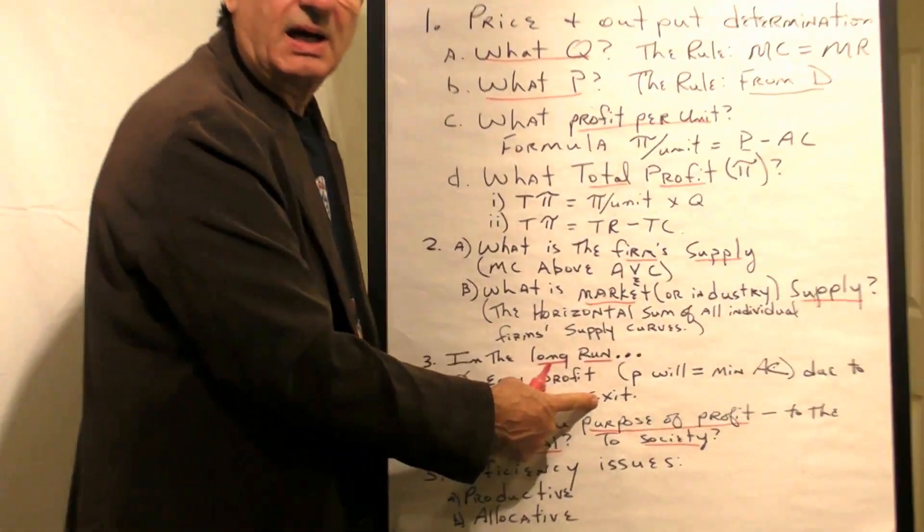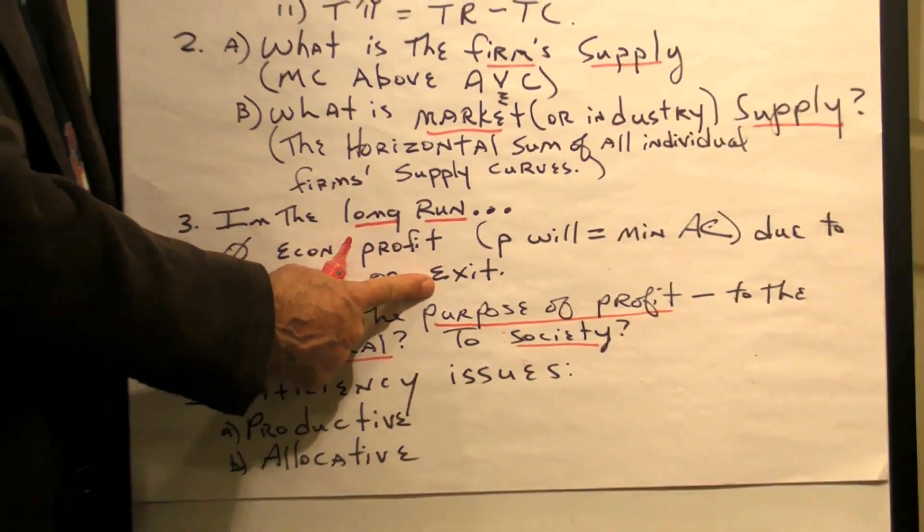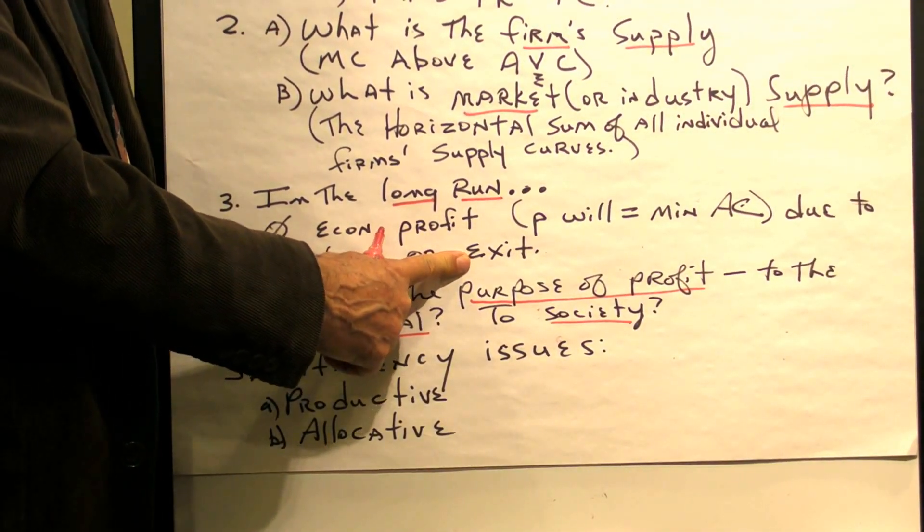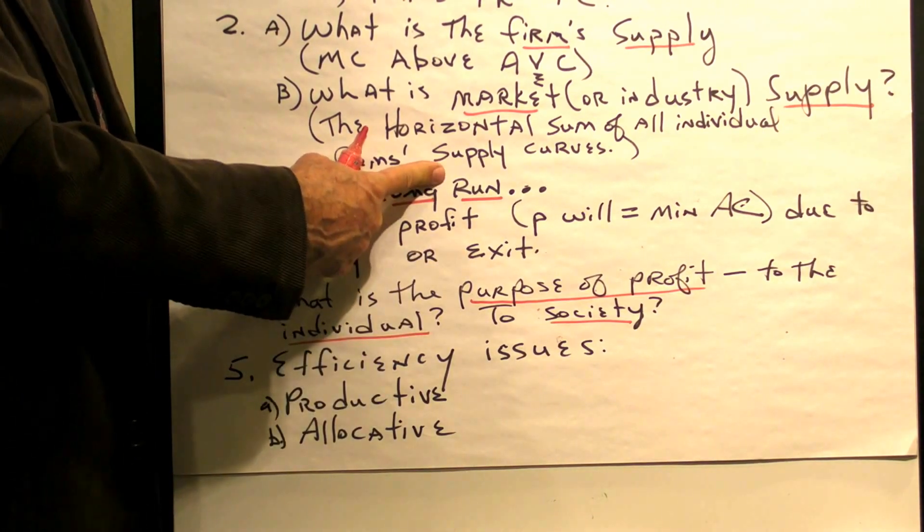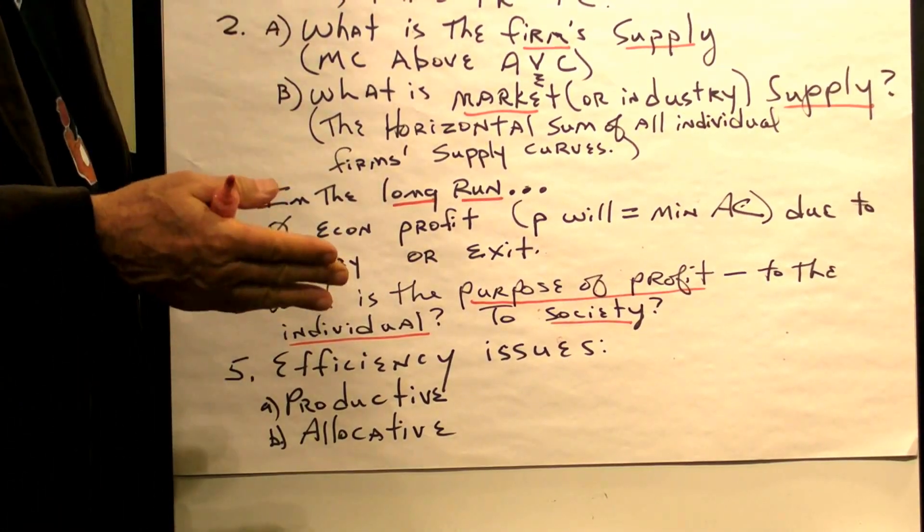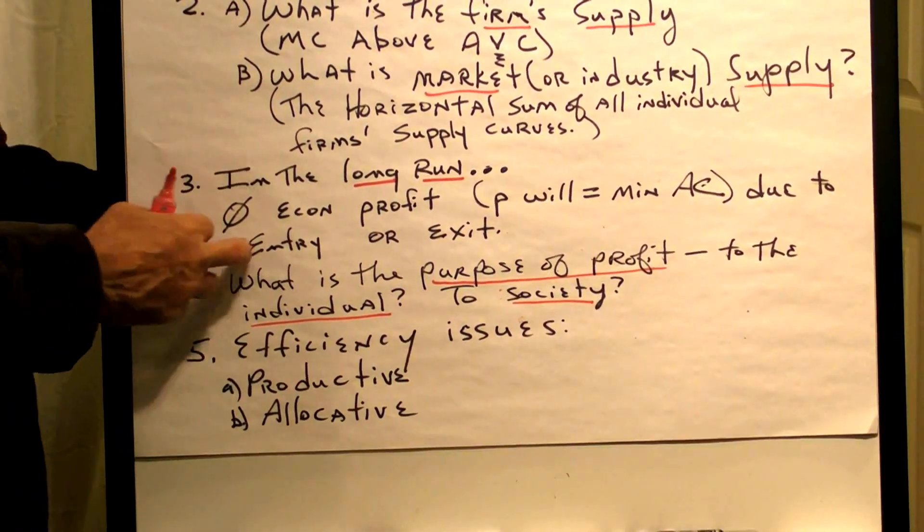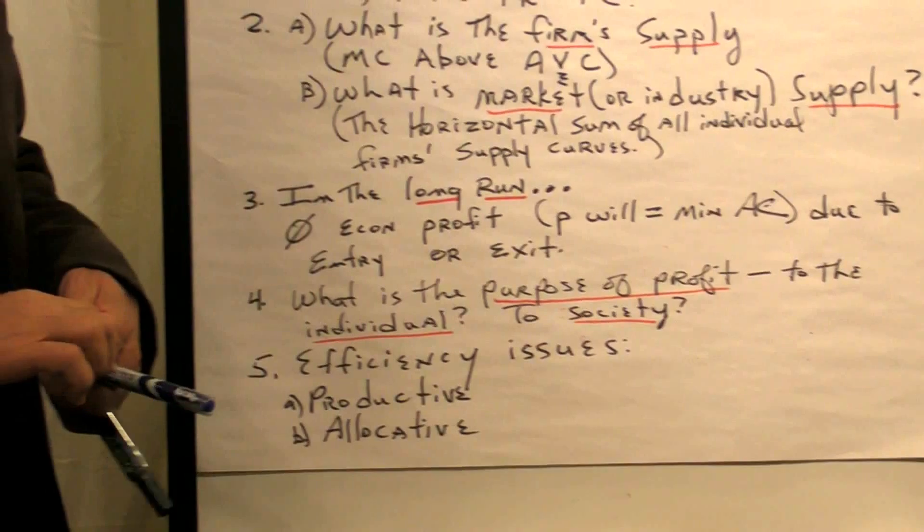If there's loss, firms have an incentive to exit. That causes the supply in the market to shift left, and the price goes up until it's just equal to average cost again, and there's no profit, no loss. So the third story is, in the long run, we can expect zero economic profits.